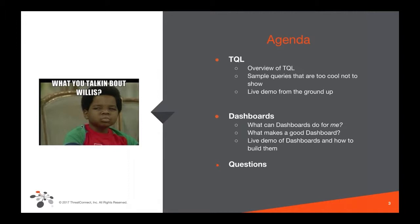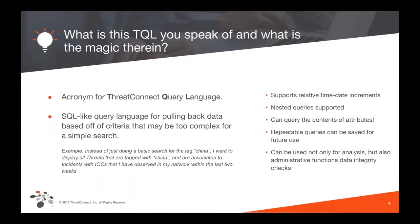Before I can show you TQL queries, we need to talk about what TQL is. TQL stands for ThreatConnect Query Language — it's an in-house developed query language for finding data within ThreatConnect when a simple search just won't do. For example, instead of searching for the tag 'China,' you may want to display a list of threats tagged with China that are associated with incidents that have IOCs you've observed in your network within the last two weeks.